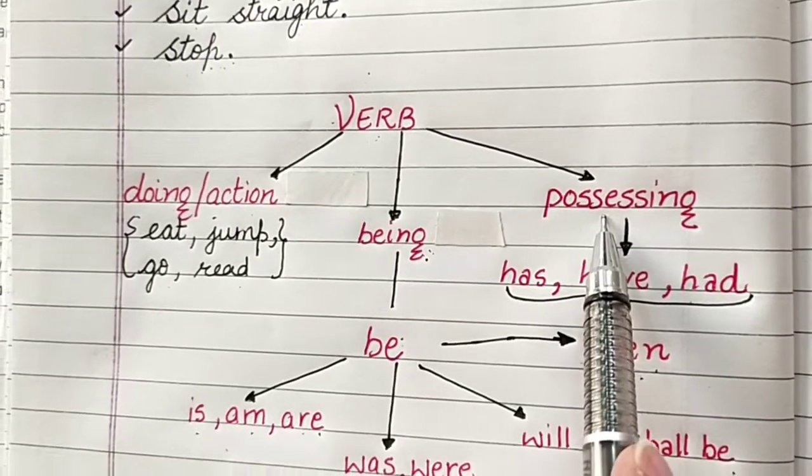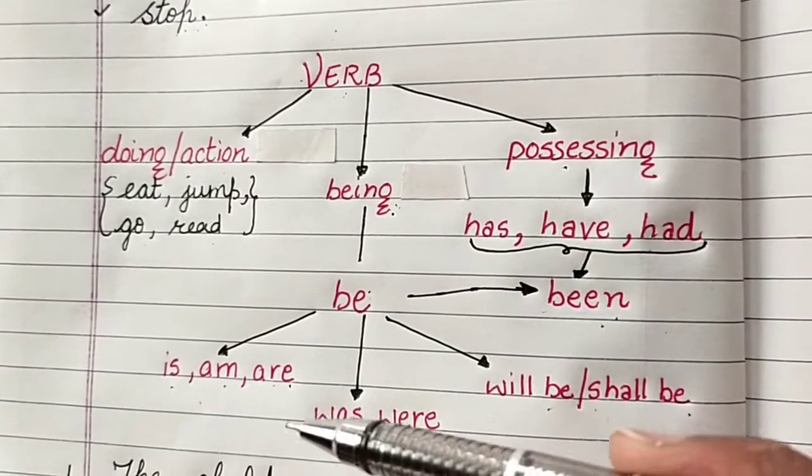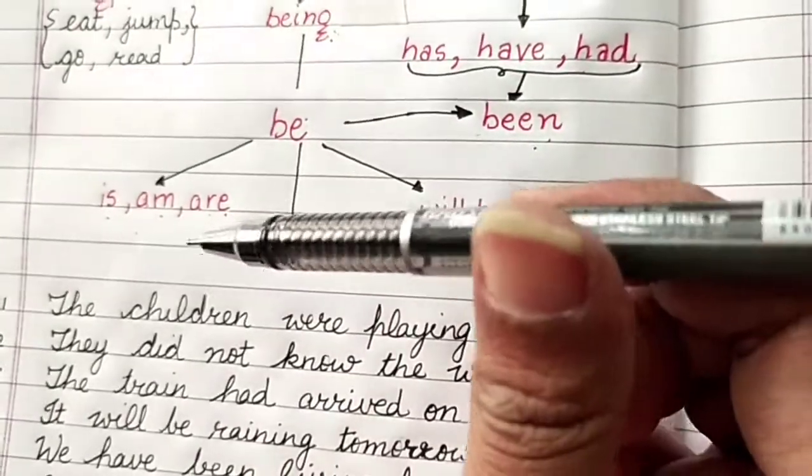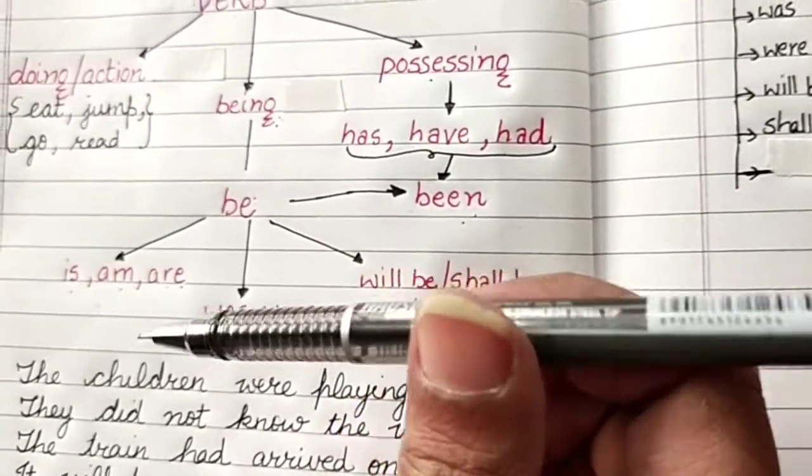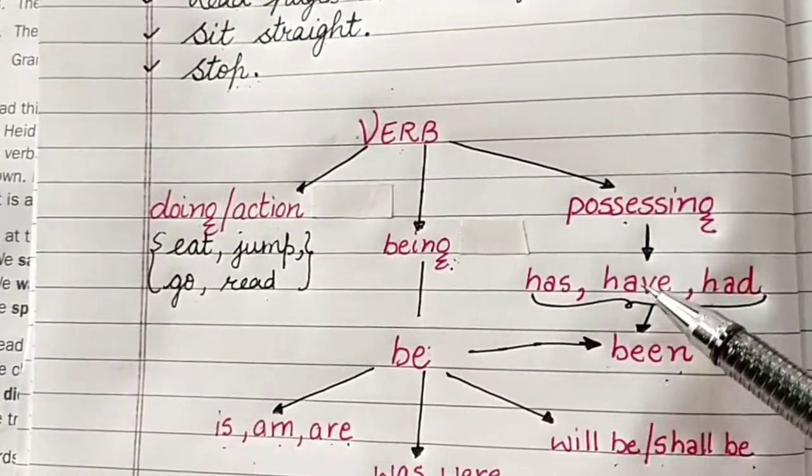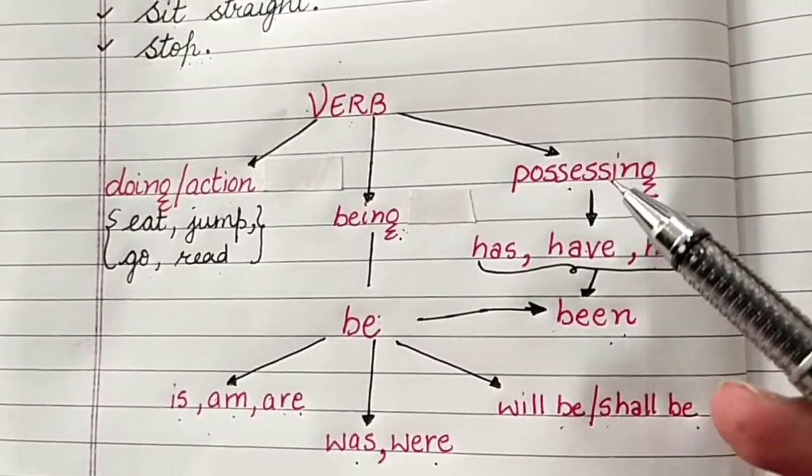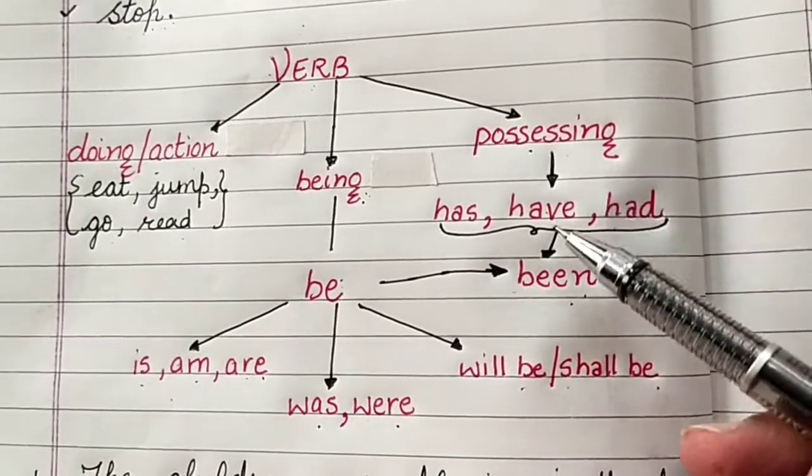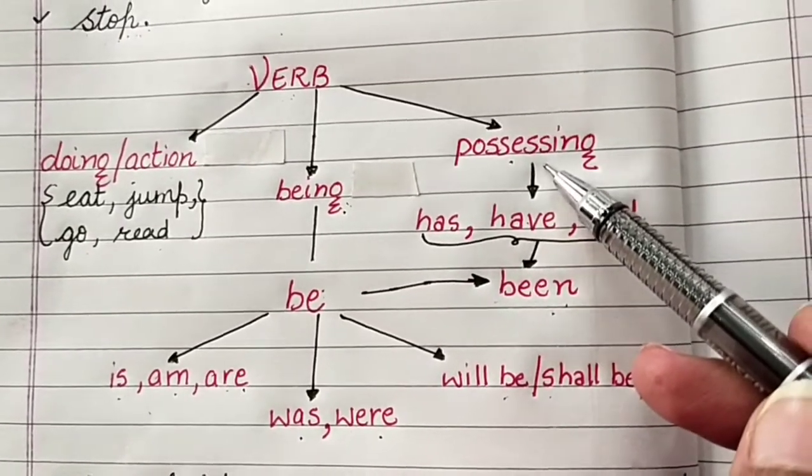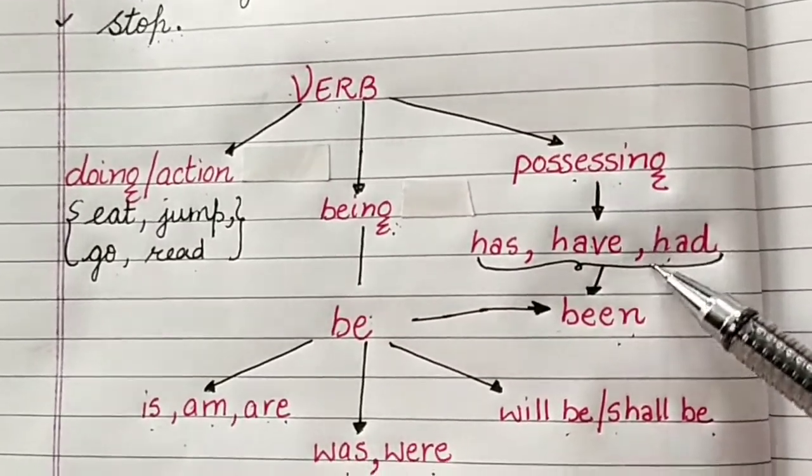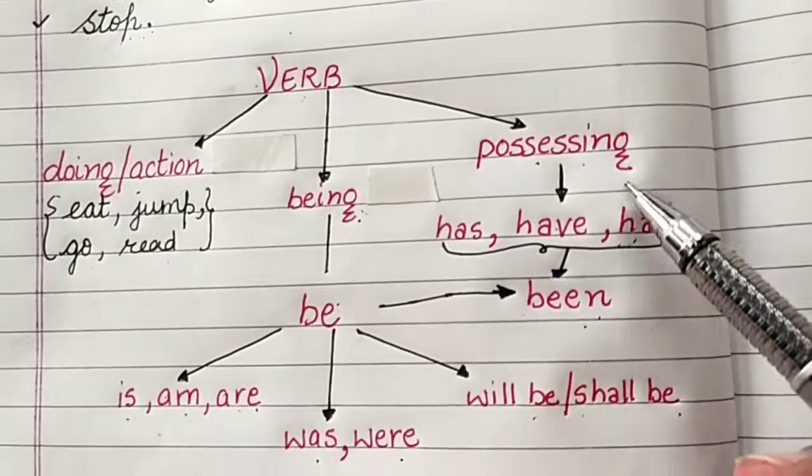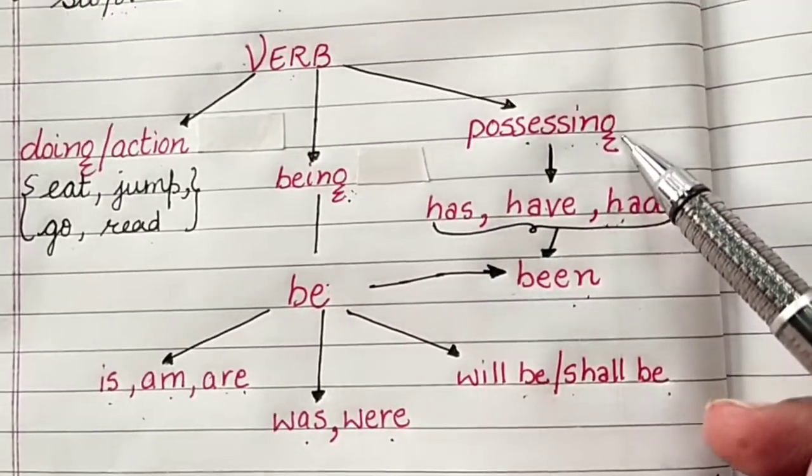Verb again shows possessing also. It denotes possessing. Sometimes if I say I have a black pen in my hand. So right now, I am not a pen. So this word have denotes possessing. I have a pen. So have here is denoting possessing. So has, have, had are also used as the verbs which shows possessing.